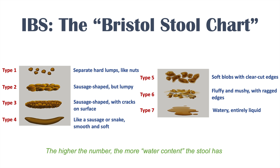A useful way to remember the Bristol stool chart: diarrhea is on one end and constipation on the other. The higher the number on the Bristol stool chart, the more water content the stool has. You might not necessarily remember every small detail, but it's important to recognize the extremes — at the high end, type 7 is essentially watery, entirely liquid stool.